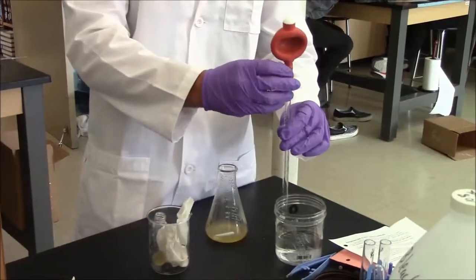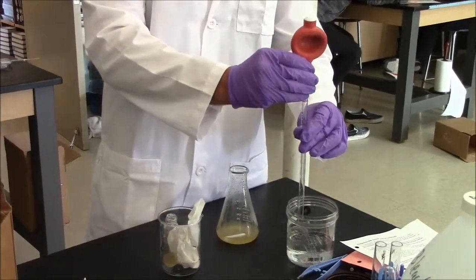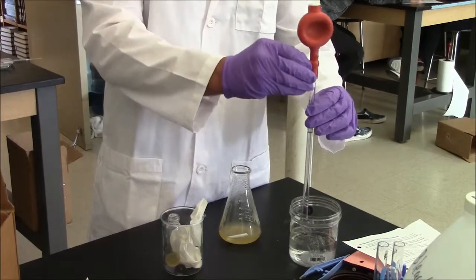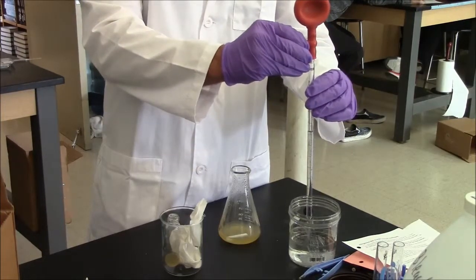After pipetting the cells, you'll want to sterilize the pipette by pipetting up and down 10% bleach. That will kill the bacteria that were in the pipette and make it safe for disposal.